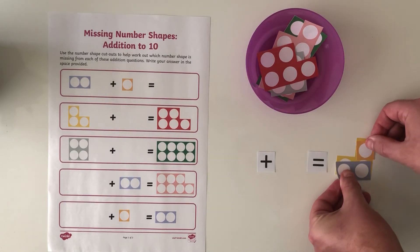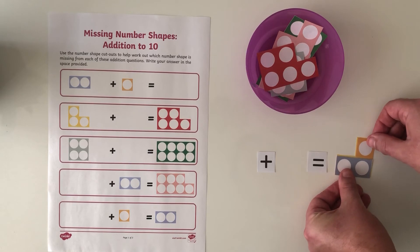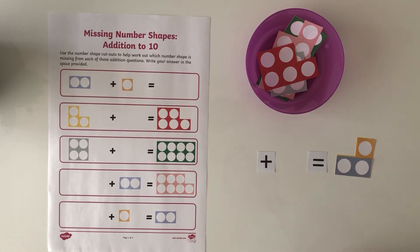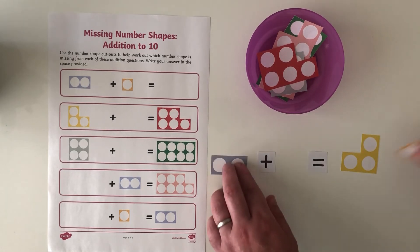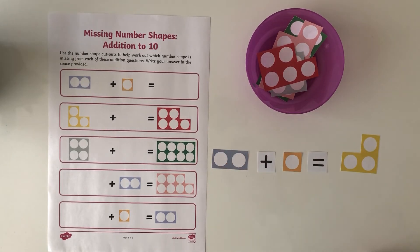So if I take my number shapes and I lay them over I can find that two and one are worth the same as three. They take up the same amount of space. And that can really help me with this next problem.